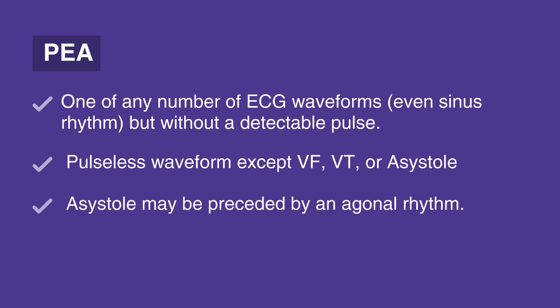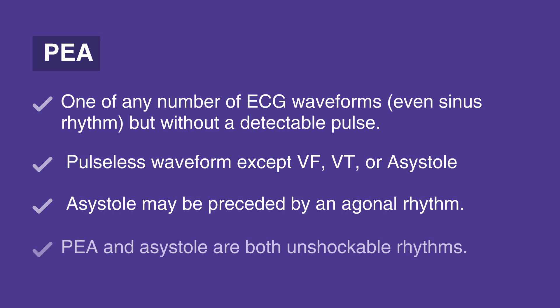Asystole may be preceded by an agonal rhythm. An agonal rhythm is a waveform that is roughly similar to a normal waveform, but occurs intermittently, slowly, and without a pulse.